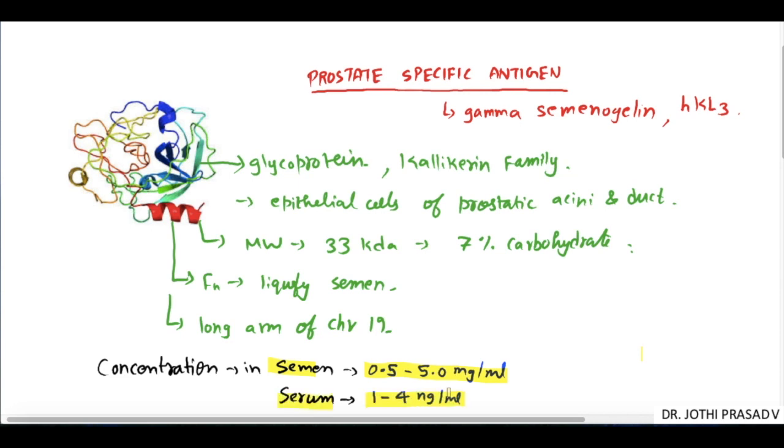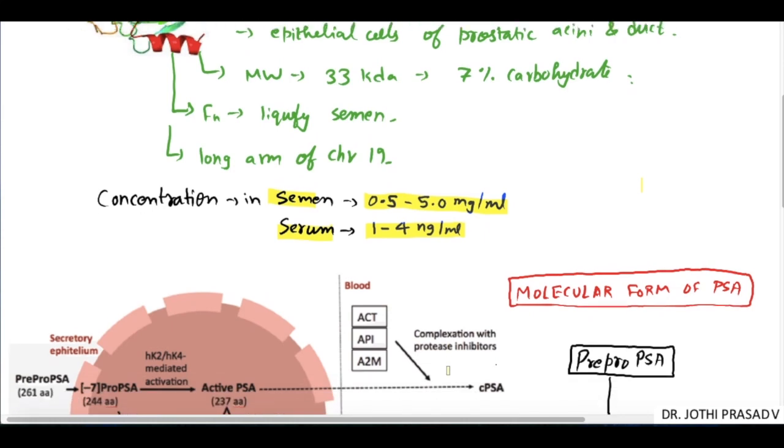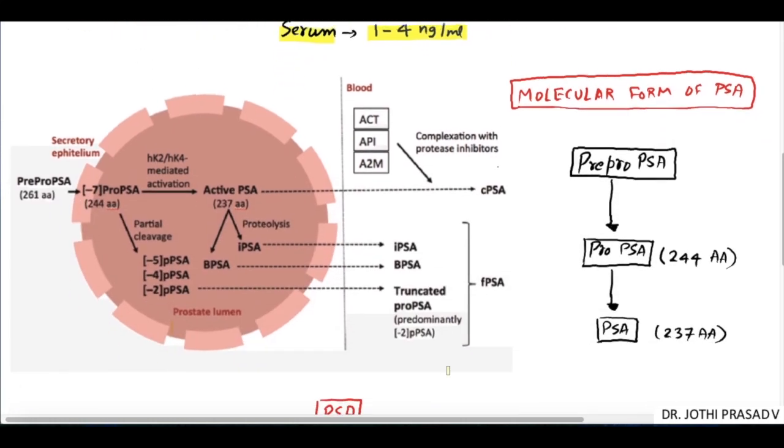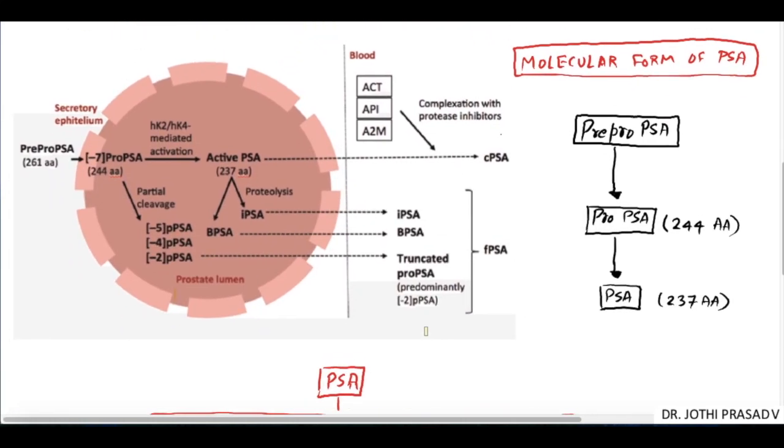The concentration of PSA in semen is 0.5 to 5 mg per ml, and in the serum it is 1 to 4 ng per ml, which is very very low.